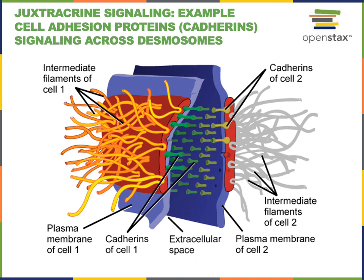Another example of juxtacrine signaling is the interaction between adjacent cells at a desmosome, where cell adhesion proteins known as cadherins bind two adjacent cells together. This signal is then relayed inside the cell and activates an intracellular signaling mechanism that can regulate the cell cycle. These cell adhesion proteins can function in a form of contact inhibition to slow down the cell cycle when the tissue is crowded and there is a large number of cells contacting one another, thereby slowing down cell division.